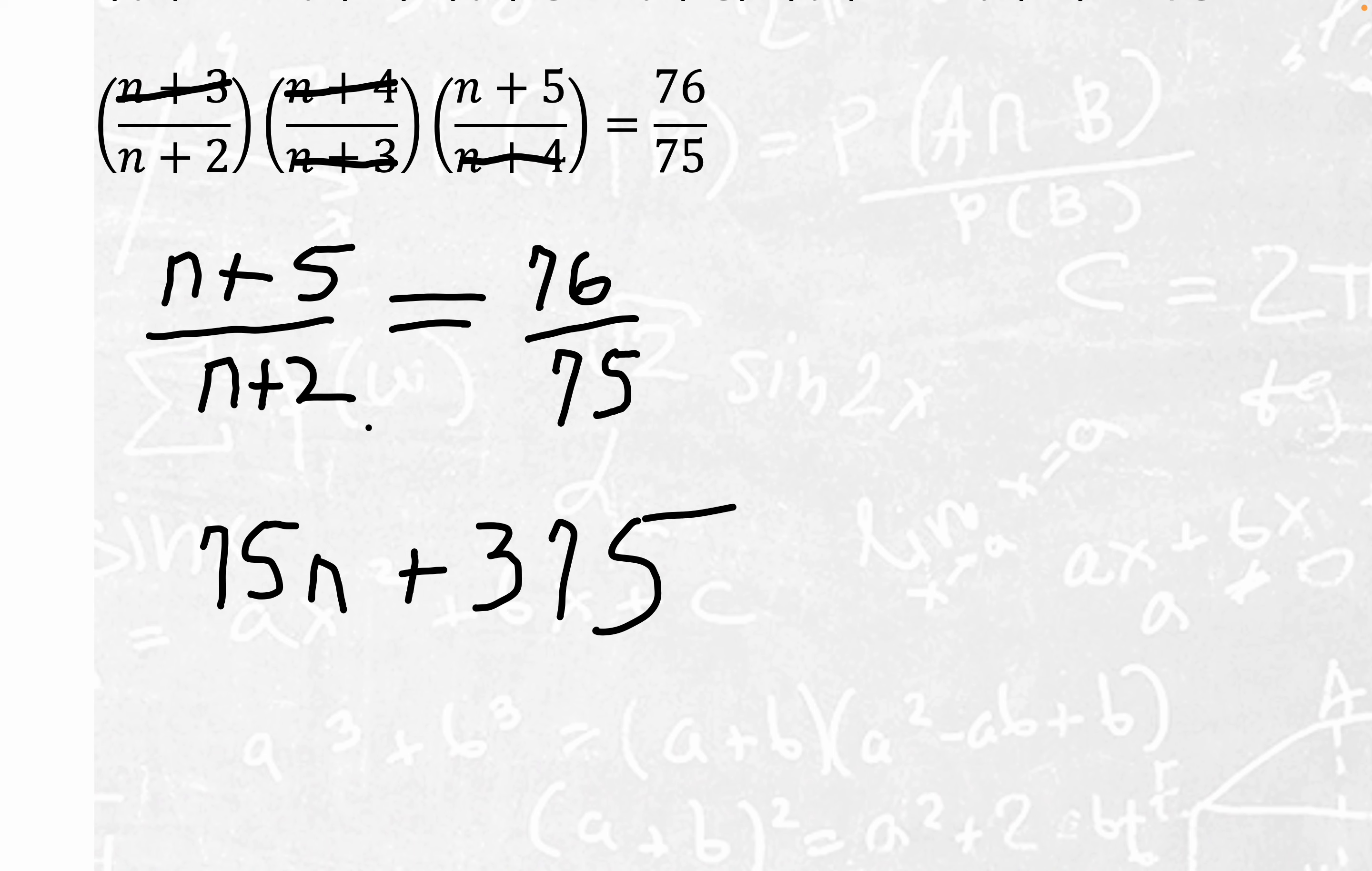and then likewise we will cross multiply this denominator with this numerator, and so you would get 76n, and then 2 times 76 I believe is 152.